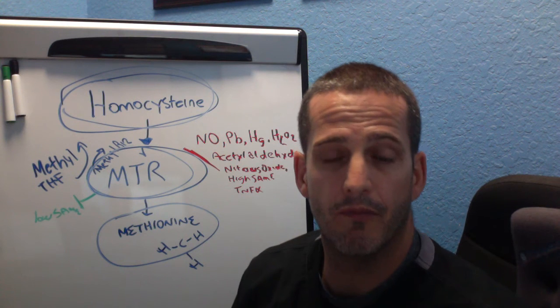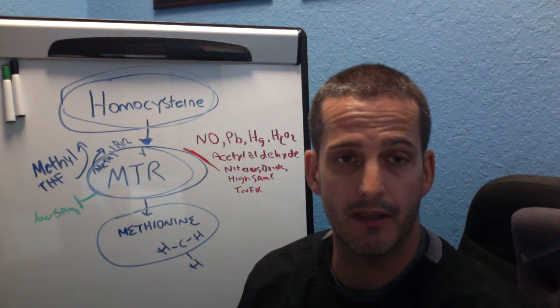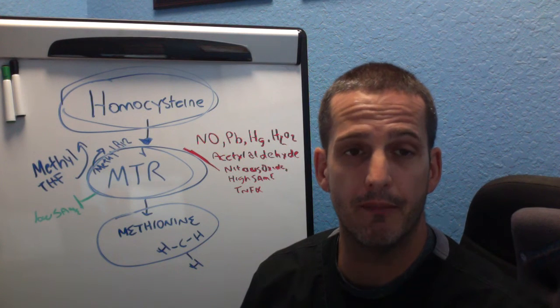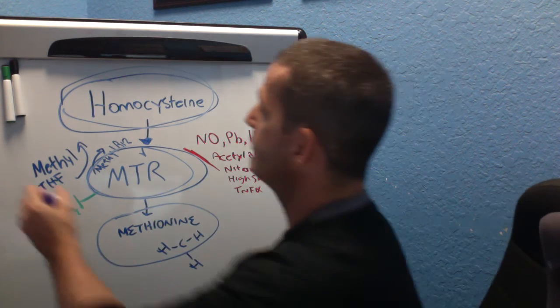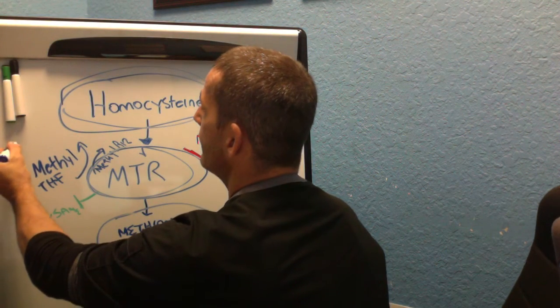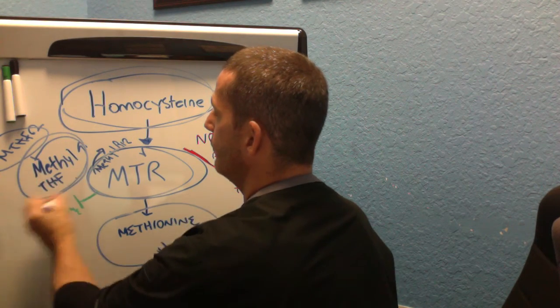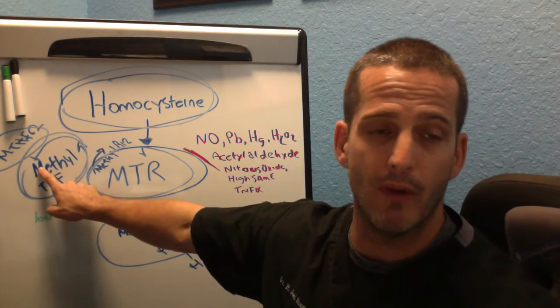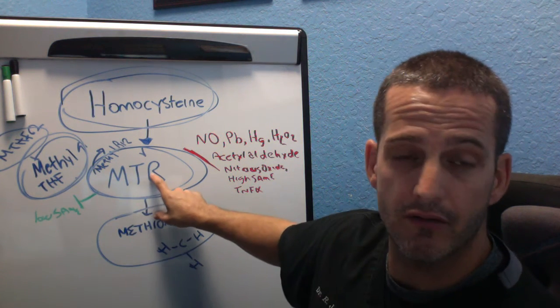MTR. And so first thing is you need to know what your MTR gene is doing because it's not only about MTHFR, it's also about MTR. Where MTHFR is, it's over here and it basically made methyl tetrahydrofolate. So that is something that we need as a cofactor for MTR to work.